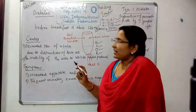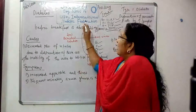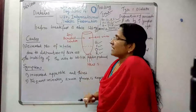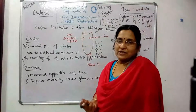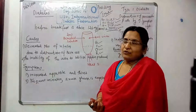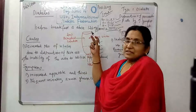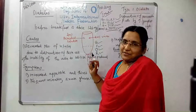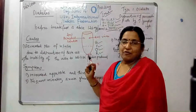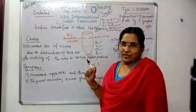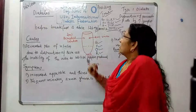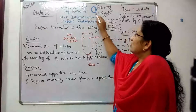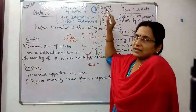The World Health Organization and the International Diabetes Federation jointly formed World Diabetes Day, observed on November 14th, with the Blue Circle as its logo.